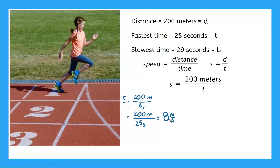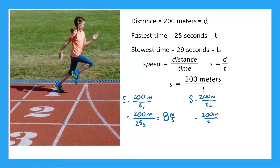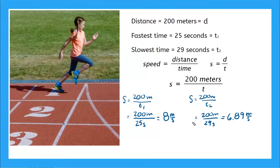Now we want her speed at her slowest time, t2, which is 29 seconds. Substituting: s equals 200 meters divided by 29 seconds. Evaluating — you might need a calculator for this one — gives 6.89 meters per second. Comparing the two, 8 meters per second is faster than 6.89 meters per second, so Chloe was running faster when she ran her fastest race. That makes sense!